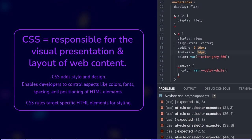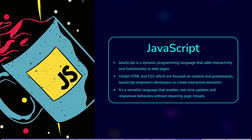JavaScript is a dynamic programming language that adds interactivity and functionality to web pages. Unlike HTML and CSS, which are focused on content and presentation, JavaScript empowers developers to create interactive elements, validate forms, manipulate the DOM (the Document Object Model), handle user events, and communicate with servers using AJAX. It's a versatile language that enables real-time updates and responsive behaviors without requiring page reloads.